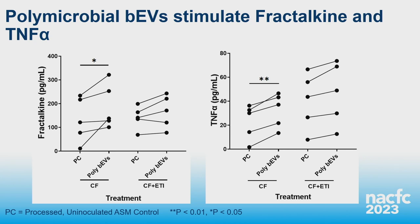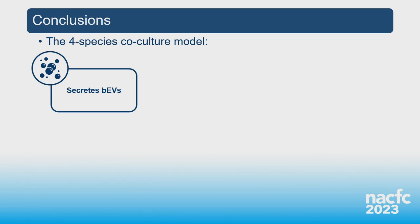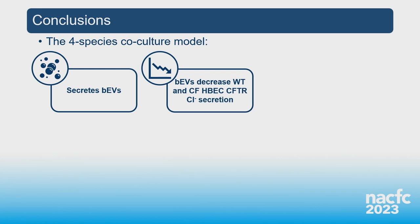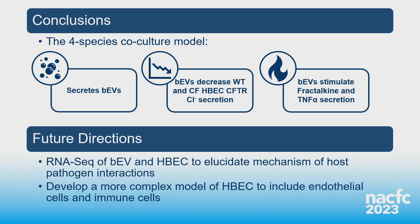Next we looked at cytokines — we expected IL-6 and IL-8 to increase with BEV treatment, but to our surprise we did not see a significant increase in CF HBEC secretion of either cytokine with polymicrobial BEVs. However, we did see increases in other pro-inflammatory cytokines — fractalkine (CXCL3), which increases chemotaxis of monocytes and lymphocytes to the lung, and TNF-α, which increases inflammation. These increases were significant only in non-ETI-treated CF cells, though ETI-treated CF HBECs trended similarly.